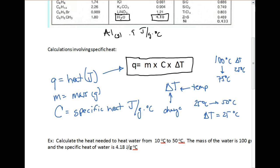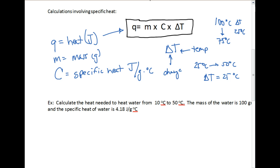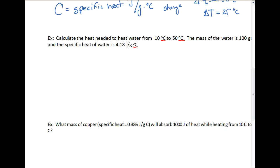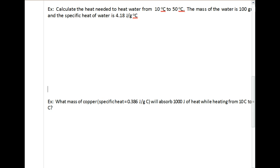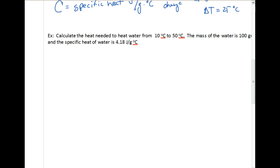Let's scroll down and work a problem here. In this example, we have: calculate the heat needed to heat water from 10 degrees to 50 degrees Celsius. What we're going to do is write down our formula first, which is q equals m c delta T, and identify some of the things here.